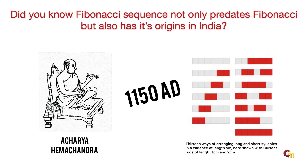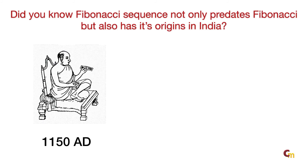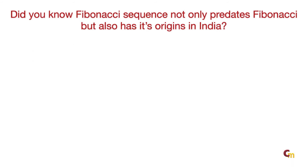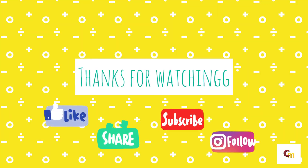Leonardo Fibonacci presented his thesis only in 1202 AD, which looked identical to the commentary made by Hemchandra. This proves that the number series presented by Indian scholar Hemchandra had preceded that of Leonardo Fibonacci by more than half a century. Thanks to awareness spread by Indian scientists, many in the global mathematics and science community have started acknowledging this and are giving credit where it is due, by mentioning the sequence as Hemchandra-Fibonacci numbers.